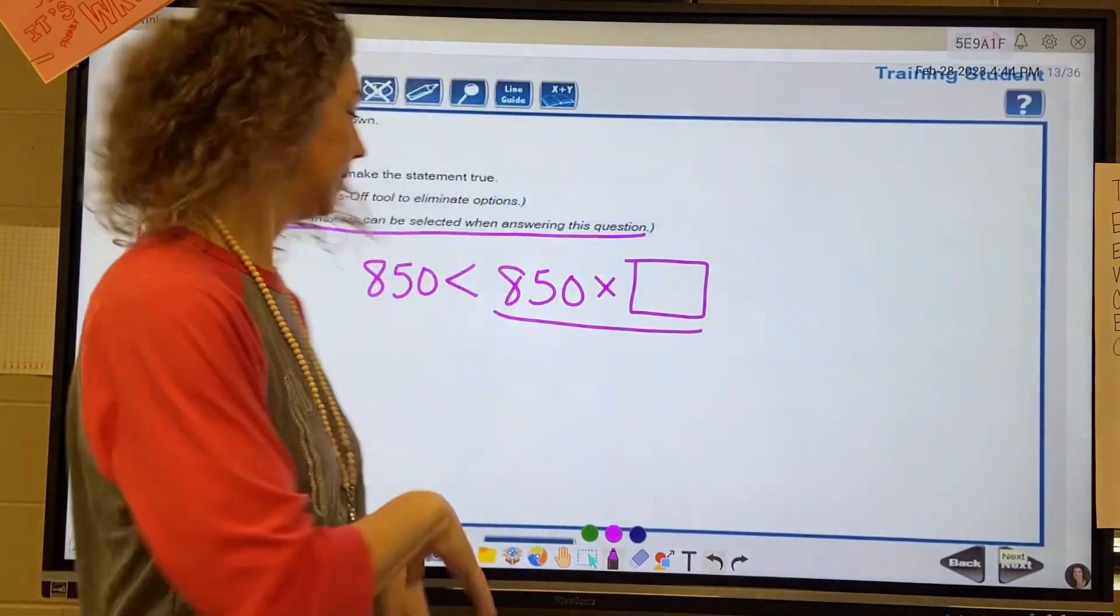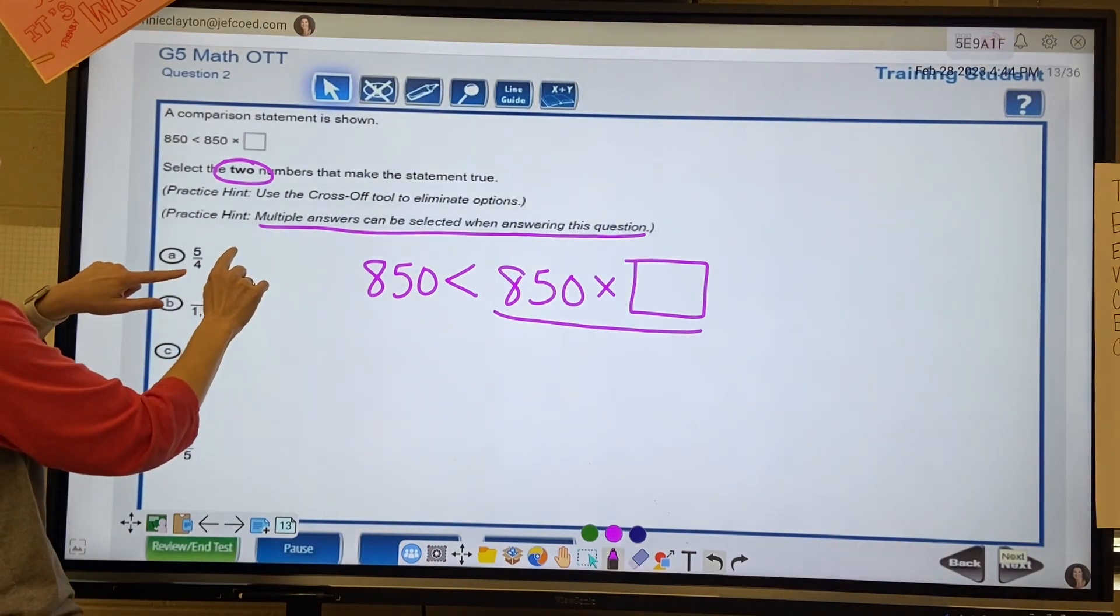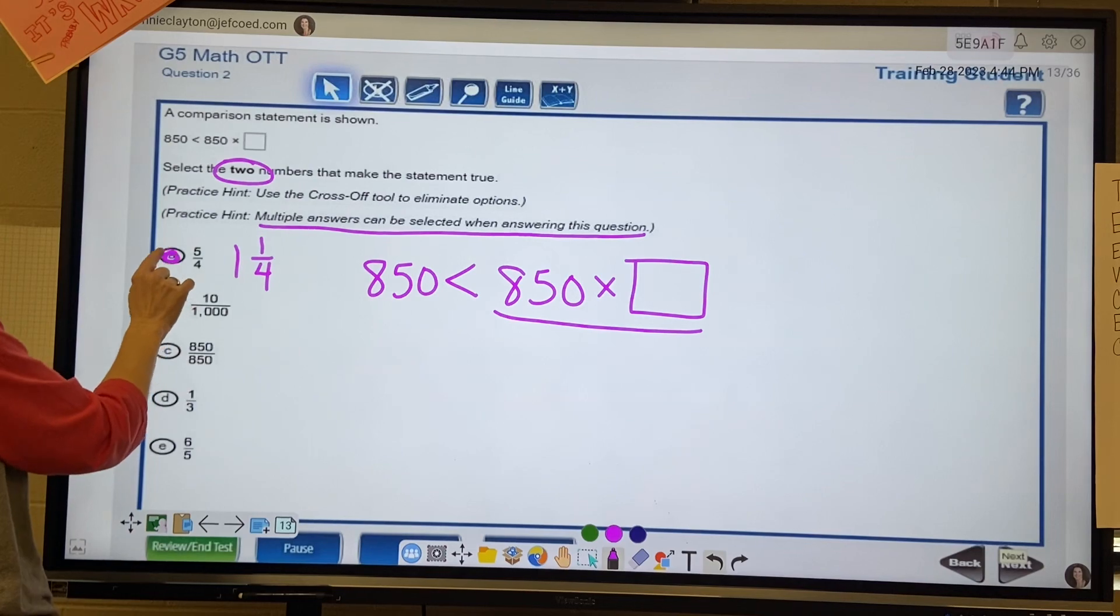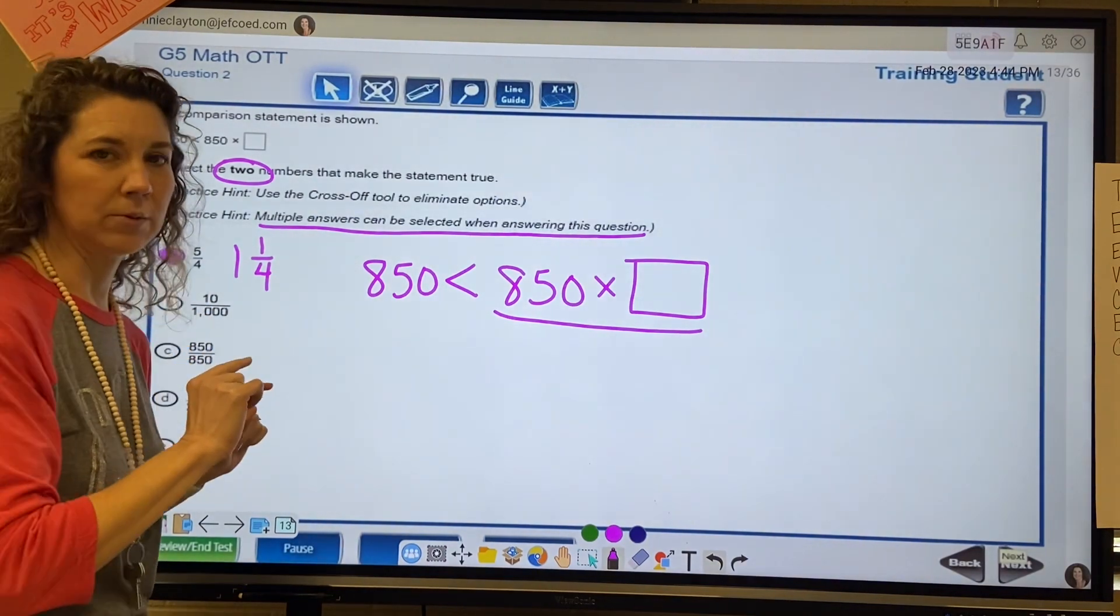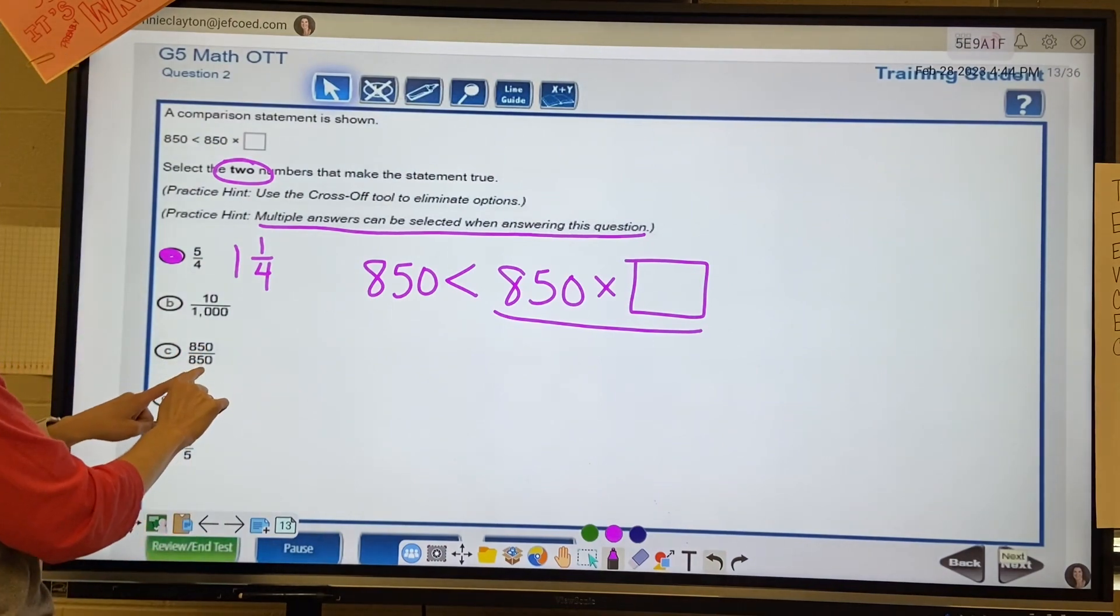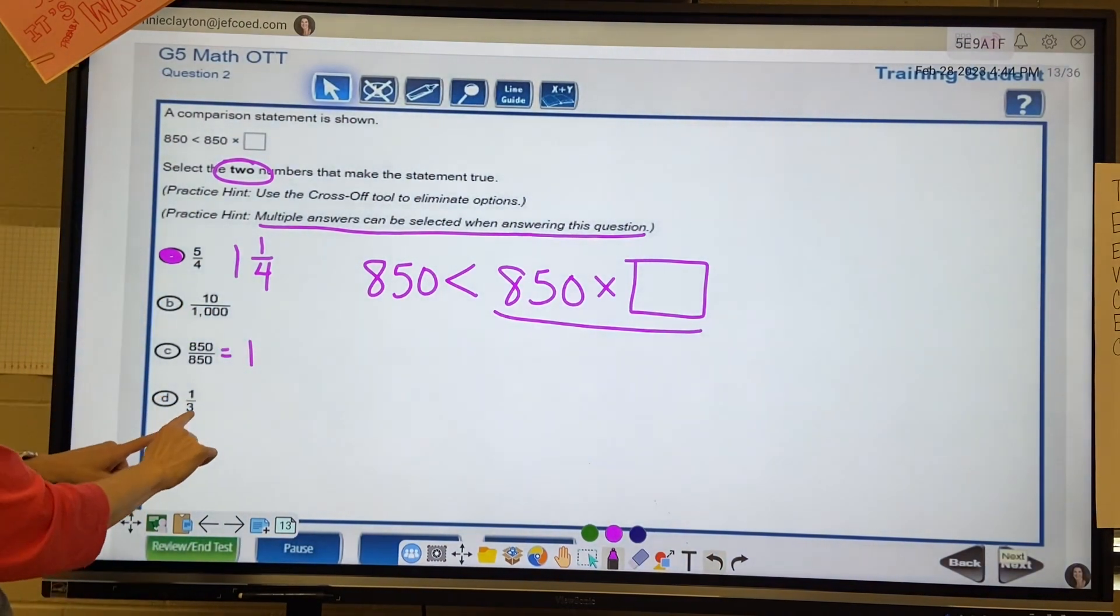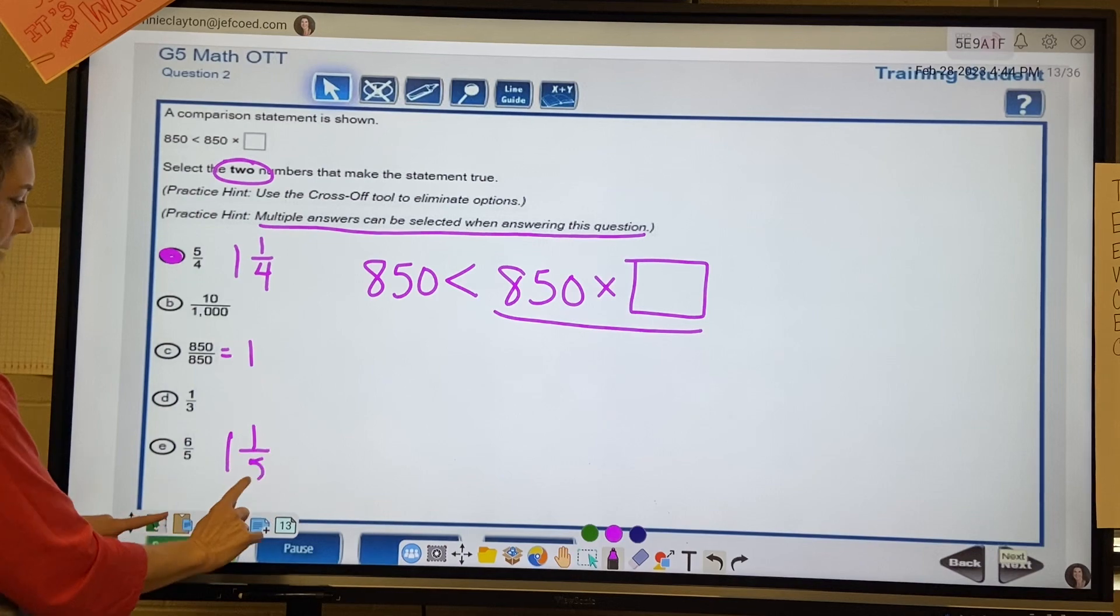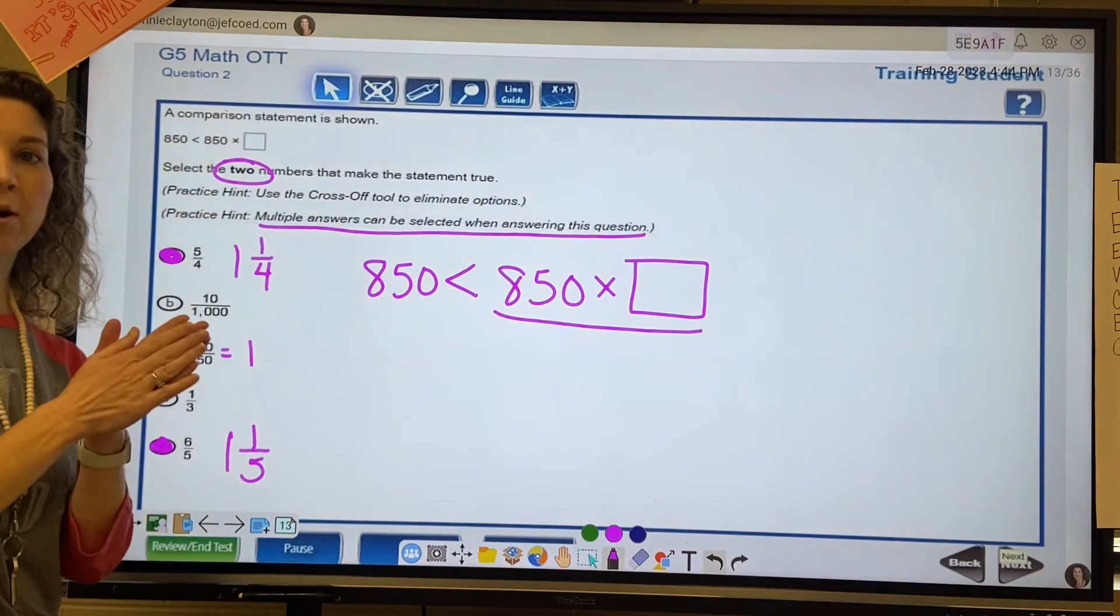Okay, five fourths - oh that's an unhappy fraction - that is one and one fourth. That is greater than one, so I'm going to pick that one. Ten one thousandths, that is less than one. 850 out of 850, that is equal to one. One third, that's less than one. Six fifths is going to be one and one fifth. That is greater than one. That is my other answer choice.